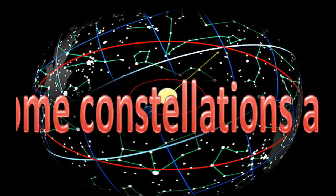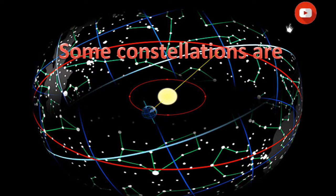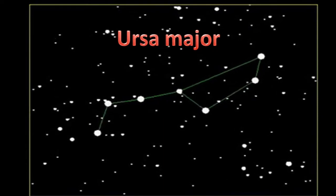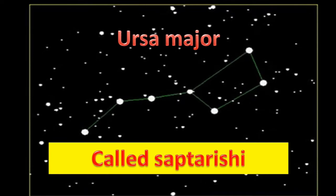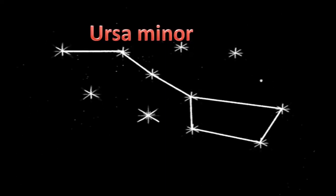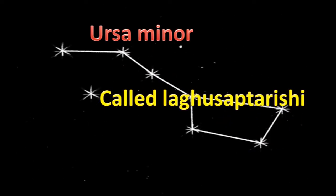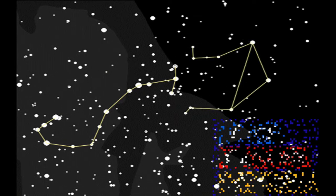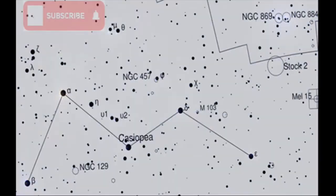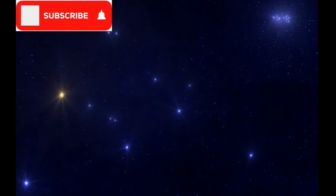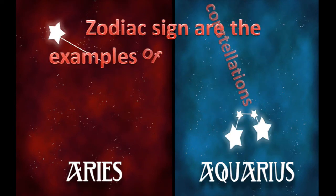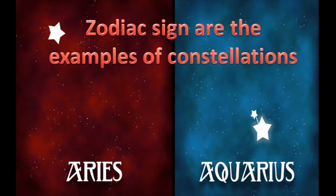Some constellations seen in space are URSA major. It is constellation of seven stars called Saptarishi. URSA minor, it is also collection of seven stars known as Laghu Saptarishi. Zodiac signs are taken from the name of constellations.